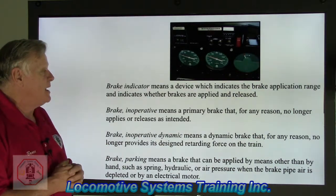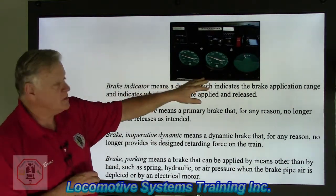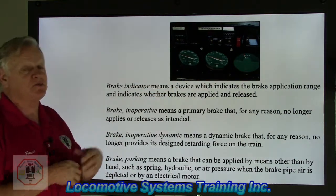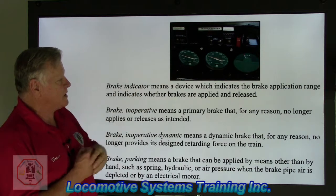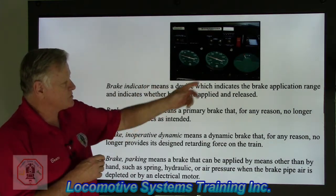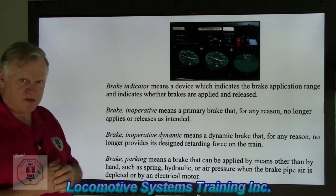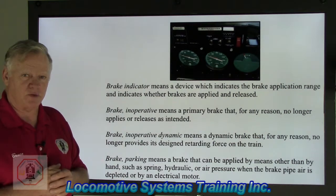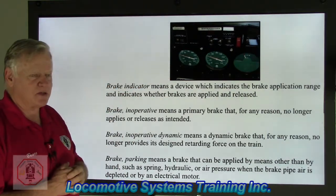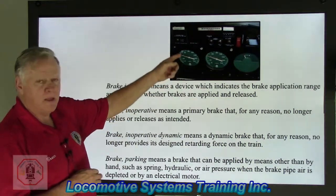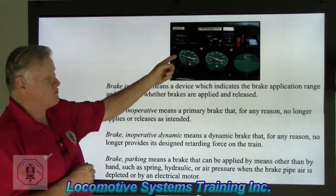Brake indicator means a device which indicates the brake application range and indicates whether brakes were applied and released. We have three gauges on the control stand. The left gauge is a duplex analog gauge — red needle indicates main reservoir pressure, typically 130–140 pounds on most railroads; the white needle represents the equalizing reservoir, normally set at 90 pounds on freight locomotives and 110 on passenger trains. The middle gauge's red needle shows brake cylinder pressure — the final product of the air brake system — measured in pounds per square inch.